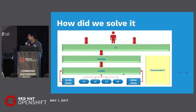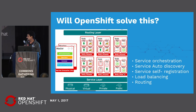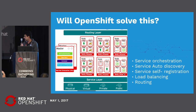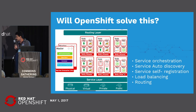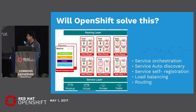OpenShift solved this problem for us. It has a routing layer that takes care of routing external requests to the services, and with its service layer it solved service discovery and load balancing for us — replacing the need for Eureka and Netflix Ribbon.